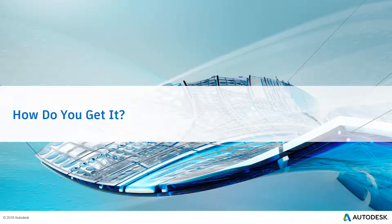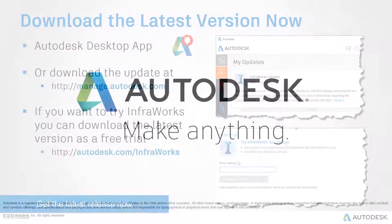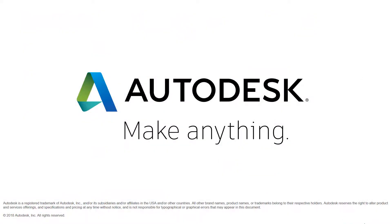After seeing the improvements that have been made in this latest release, I'm sure you're wondering how you can download and install it right away. All you have to do is check your Autodesk desktop application or visit manage.autodesk.com and look for the update. If you're not currently an InfraWorks customer, simply visit autodesk.com/InfraWorks and download the free 30-day trial. Thanks for allowing me to tell you about the exciting new features in InfraWorks release 2018.2.